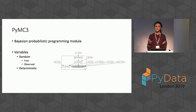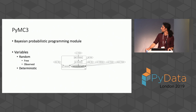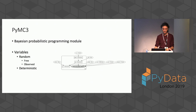For those who don't know, PyMC3 is a probabilistic programming language where you represent your model in terms of variables. These can be free random variables sampled from a distribution, observed variables (your data), or deterministic variables that are functions of other variables in the model. The result is a graph showing which variables generate which other variables and how they end up at the data.